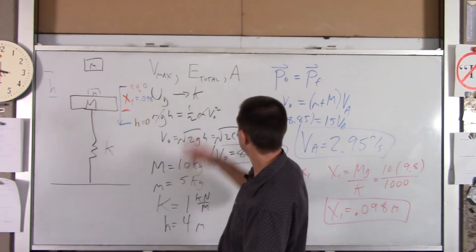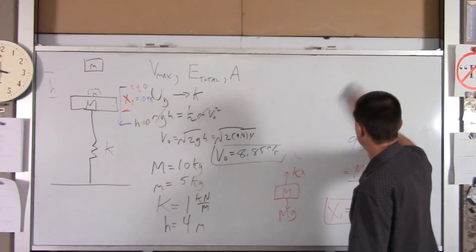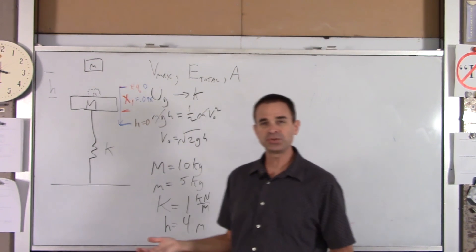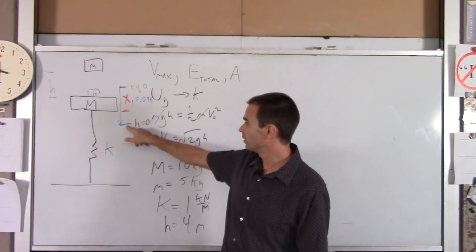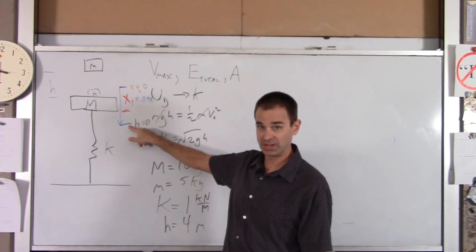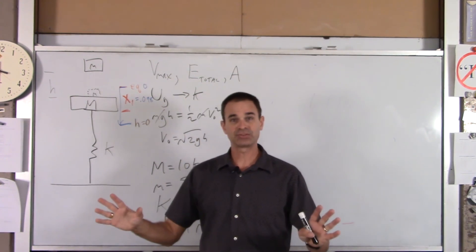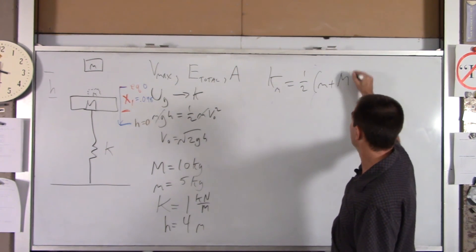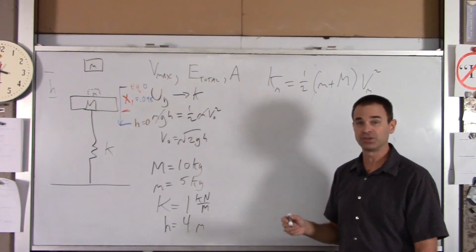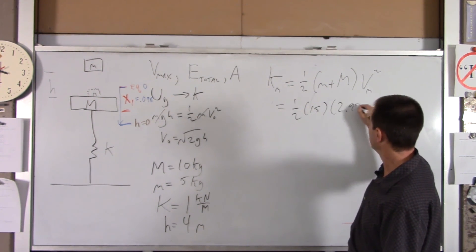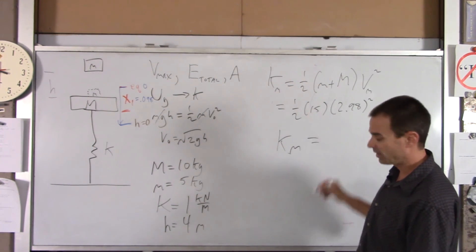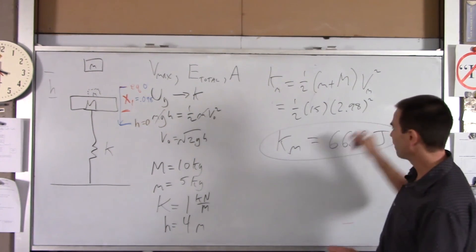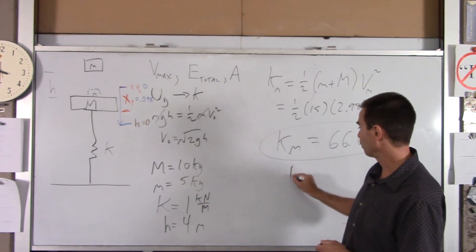You have a choice of method — either works. Now, finding the other two quantities is straightforward. The total energy of the system equals the maximum kinetic energy at the equilibrium point: one-half times (little m plus big M) times V-max squared, equals one-half times 15 times 2.98 squared, which gives 66.6 joules. That maximum kinetic energy is also the total energy in the system.